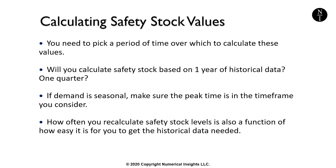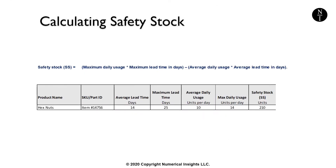Let's put some numbers into our equation. Suppose we have a supplier that has been delivering this item on average in 14 days; however, over the last year, there have been deliveries that have taken as much as 25 days. Additionally, we typically use about 10 of these items per day, but we also have days where we've used as many as 14 in a day. Putting these four values into the safety stock formula, we get a value of 210 for our safety stock level.